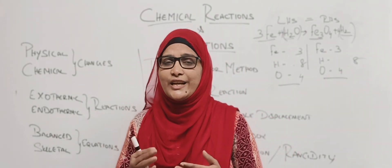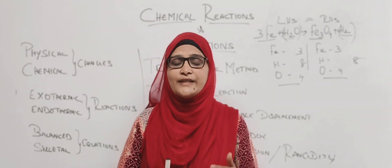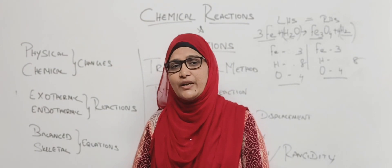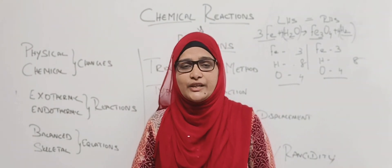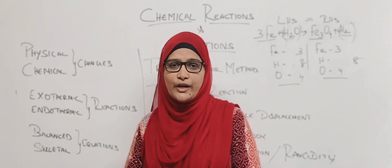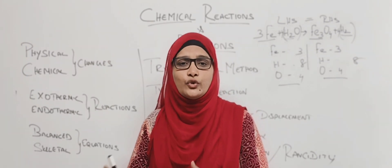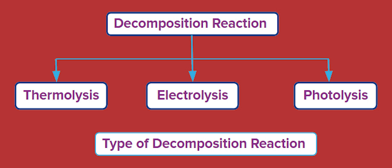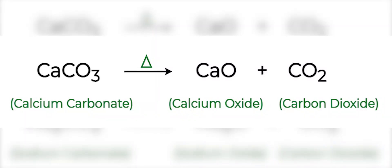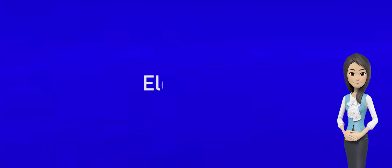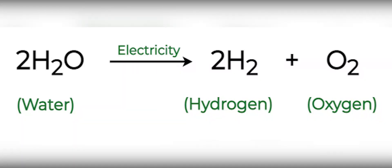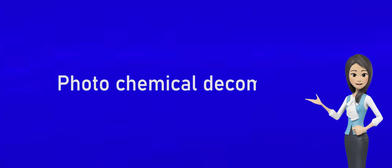Next we have decomposition reactions, which are the opposite of combination reactions. In combination, reactants combine to give a single product; in decomposition, a single reactant breaks to give two or more new products. There are three types: thermal decomposition (e.g., calcium carbonate heated gives calcium oxide plus carbon dioxide), electrolysis (water with electric current gives hydrogen plus oxygen), and photochemical decomposition — silver chloride exposed to sunlight gives silver plus chloride, used in black-and-white photography.